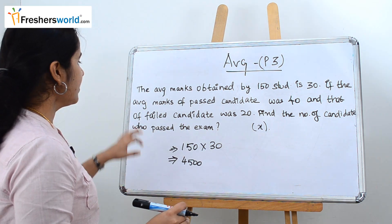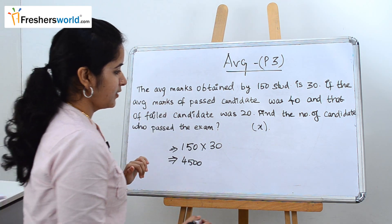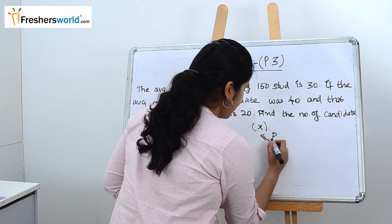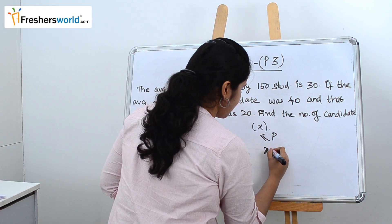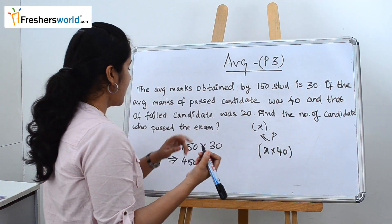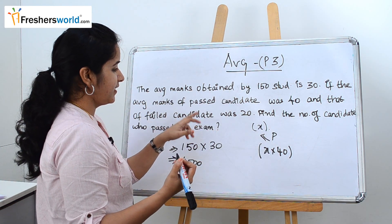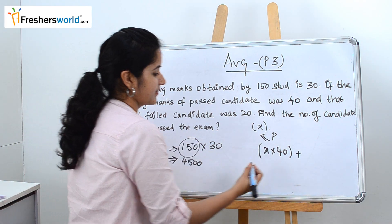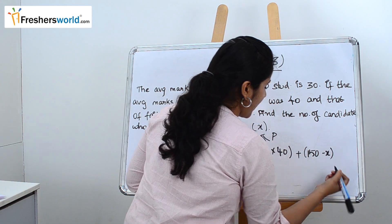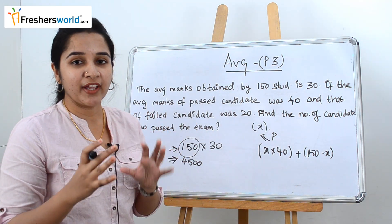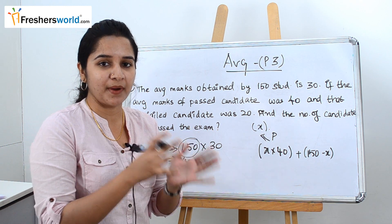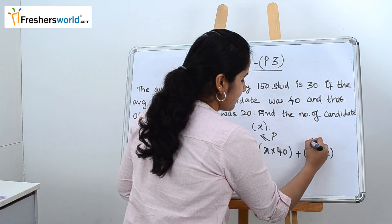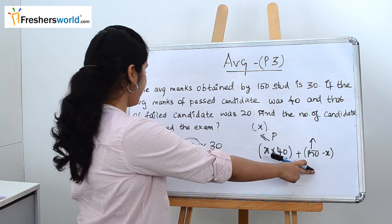What else have they given? The average marks of the passed candidate was 40. We don't know the number of people who passed, so let's consider that as x. Number of passed candidates is x and their average marks was 40. The average of the failed candidate is 20, and the number of failed candidates is nothing but 150 minus x, since the total must be the sum of passed and failed.